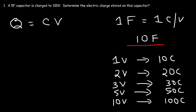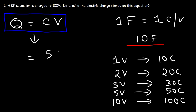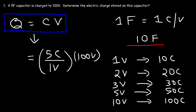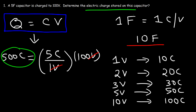Hopefully that gave you a good understanding of capacitance and what it is in relation to charge and voltage. Now let's focus on this problem. We have a 5-farad capacitor, which means this capacitor can store 5 coulombs per volt. So if we apply 100 volts to it, it can store 500 coulombs. If we only apply 1 volt, it would store 5 coulombs — but 100 volts leads to 500 coulombs. That's how you calculate the electric charge stored on this capacitor.